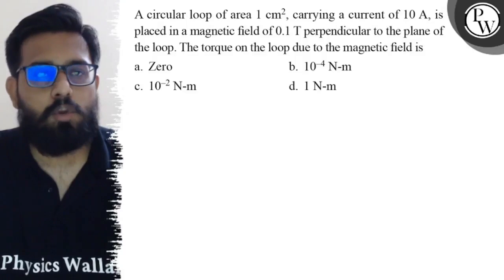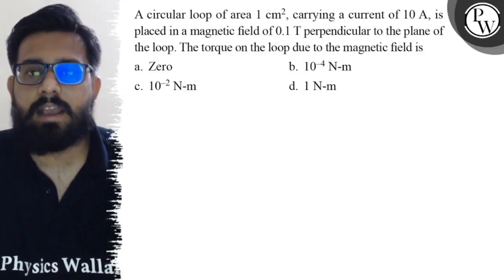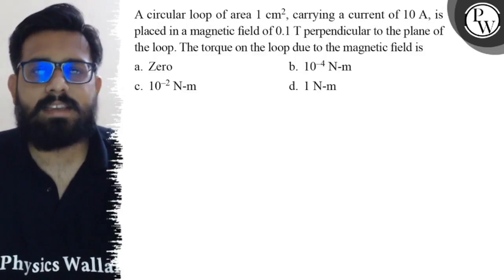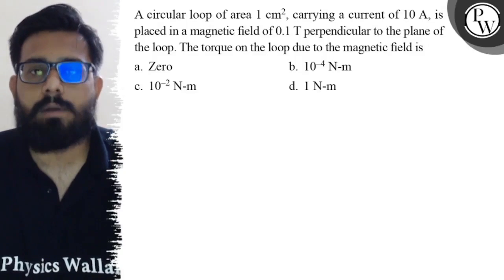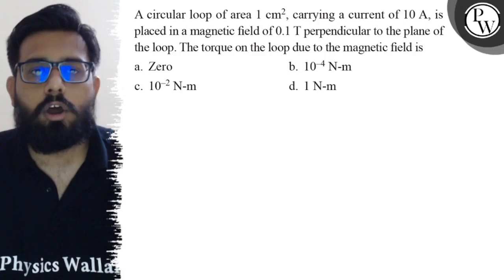Let's see the question: A circular loop of area 1 cm² carrying a current of 10 A is placed in a magnetic field of 0.1 T perpendicular to the plane of the loop. The torque on the loop due to the magnetic field is: